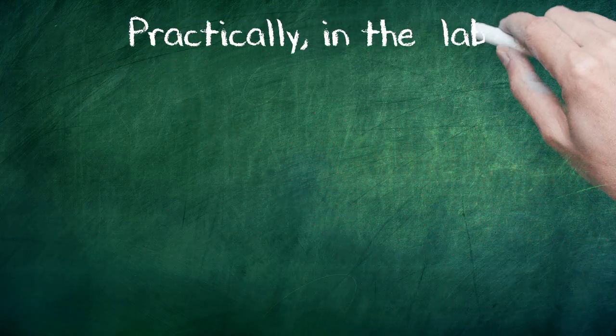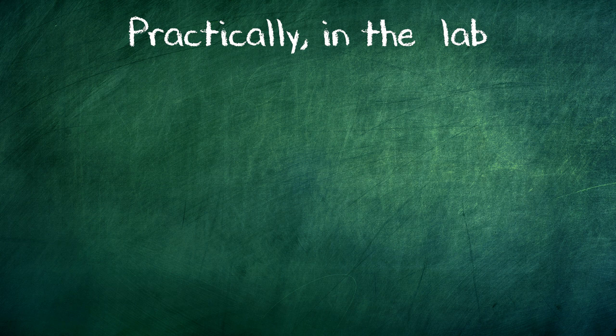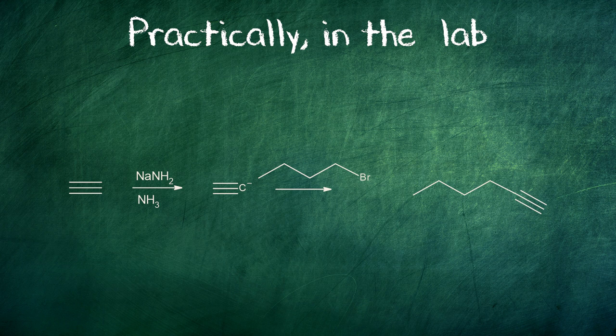Practically, in the lab, the reaction will be done this way. Mixing acetylene with sodium amide will give the acetylide. The addition of the bromobutane on the acetylide will afford one alkyne. That is the first step of a synthesis.